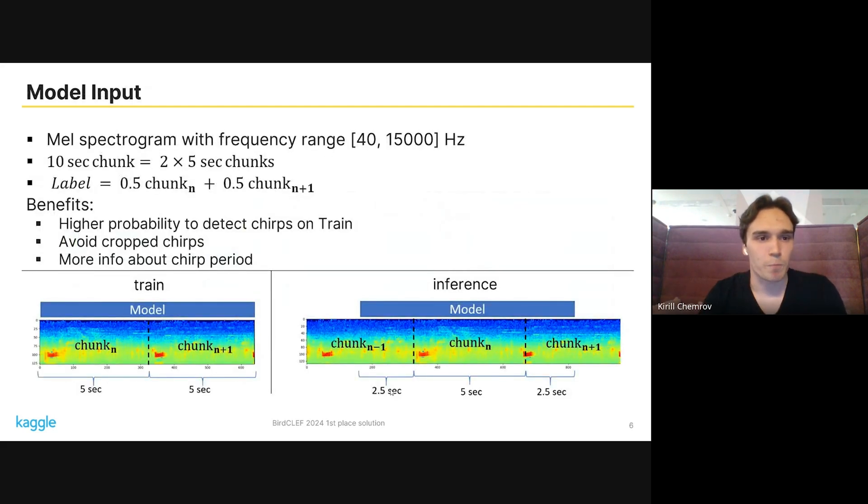Let me describe the input for the model. We use only visual models, so first we calculate mel spectrograms from audio. The priority of our solution is that we use 10-second chunks as model input. Although the task is to label 5-second chunks, we use 10 seconds and just continue to adjacent chunks and average their labels.